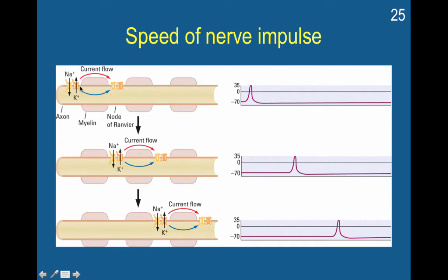The sodium channels open and this increases positivity, then the potassium channels open, and this positive charge automatically jumps through conduction along the myelin to the next break — the node of Ranvier. Then this positive charge opens up the sodium channels again, and travels down as a conductor into the next section, so it looks like little blips across time.